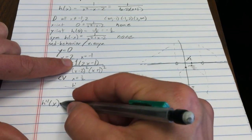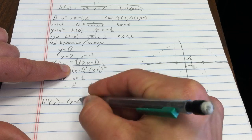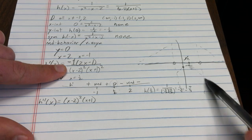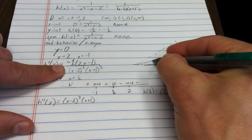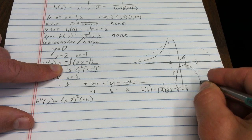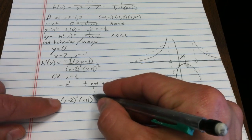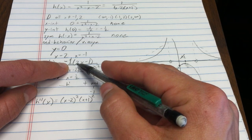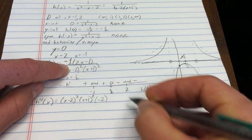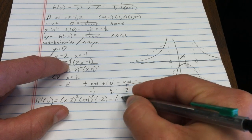Now I'll take the second derivative using the quotient rule again. I already have a good idea of the shape from the asymptote behavior — I'm expecting concave up for x greater than 2, concave down between negative 1 and 2, and concave up for x less than negative 1. Let's verify by computing it.